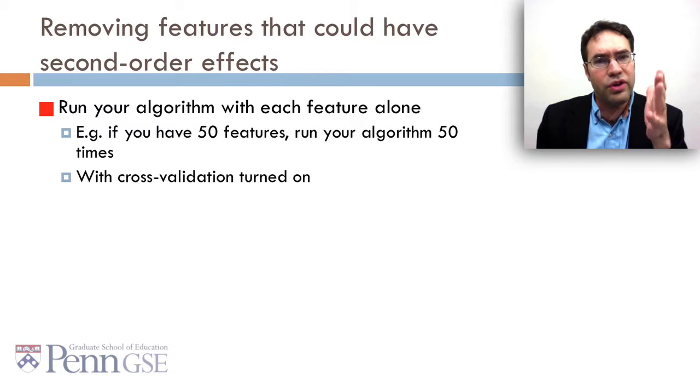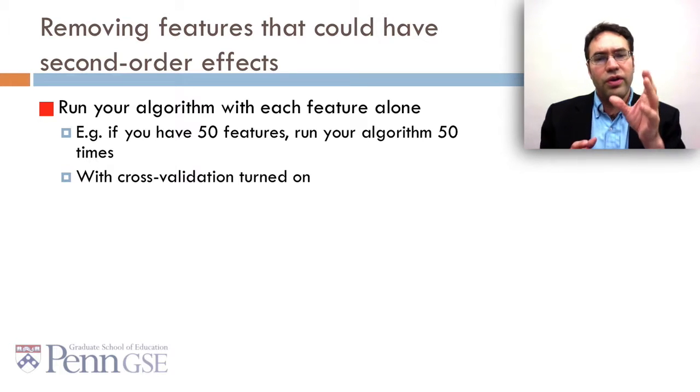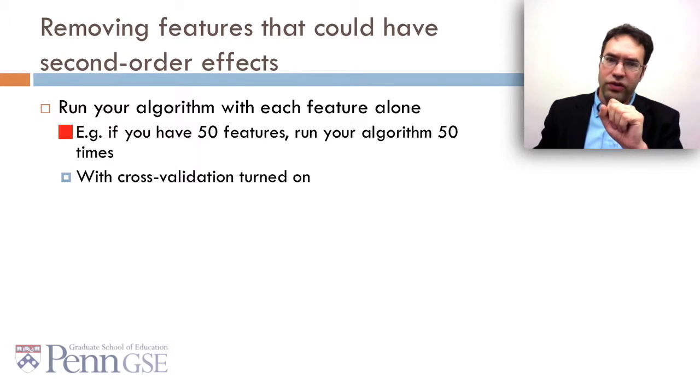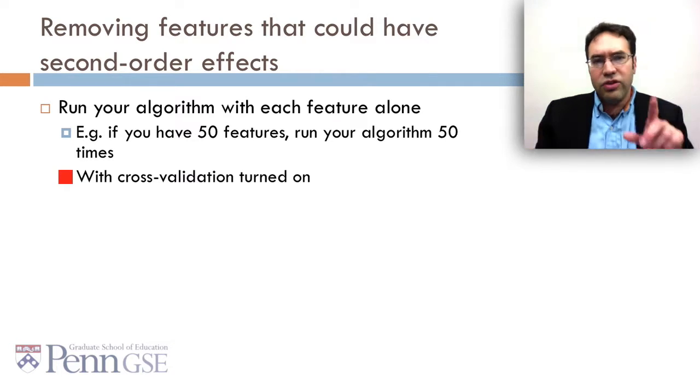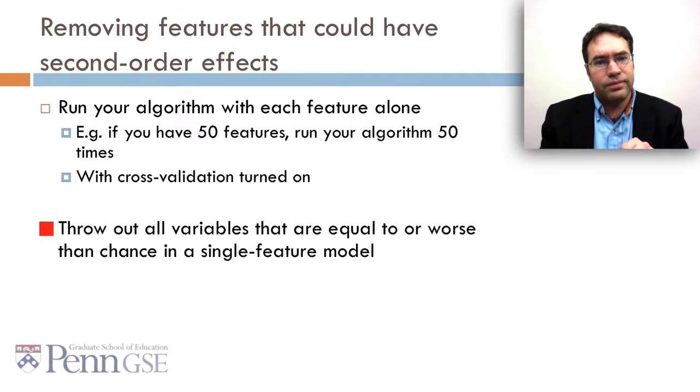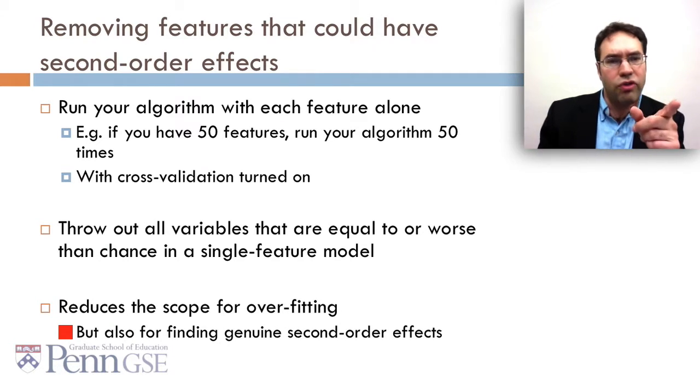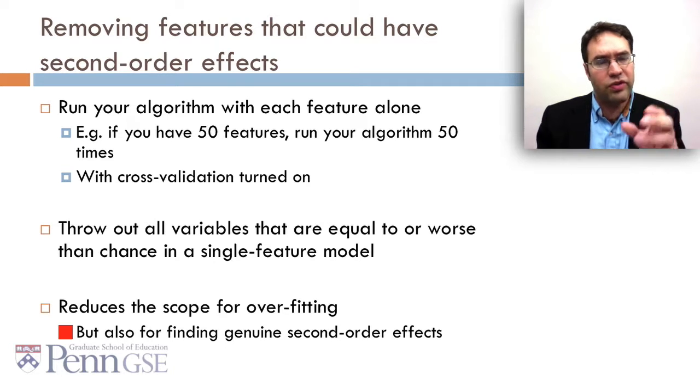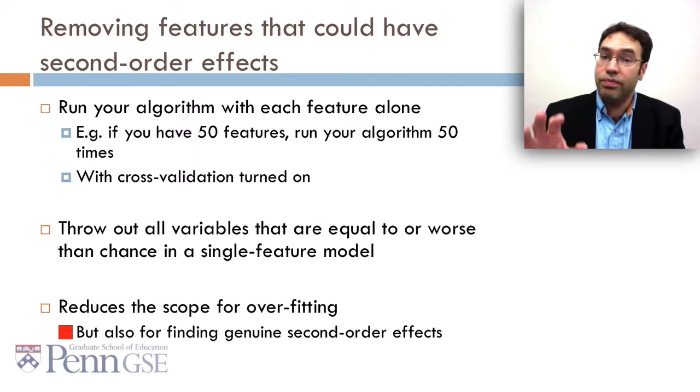Another thing you can do is remove features that can have second order effects. When you do this, you run your algorithm with each feature alone, so single feature models. So in other words, if you have 50 features, run your algorithm 50 times, and do that with cross-validation turned on. Then you throw out all variables that are equal to or worse than chance in a single feature model. This reduces the scope for overfitting, but it also reduces the potential for finding genuine second order effects. So this is a conservative choice that may lead to less overfitting but may actually lead to less positive true-fitting.